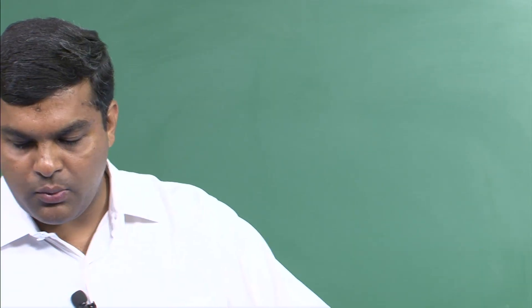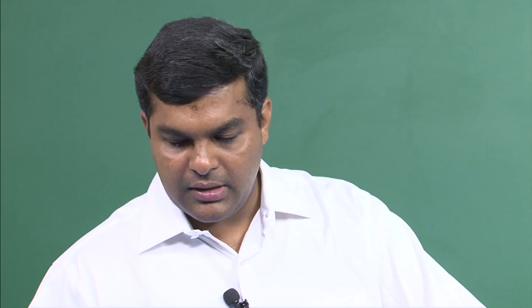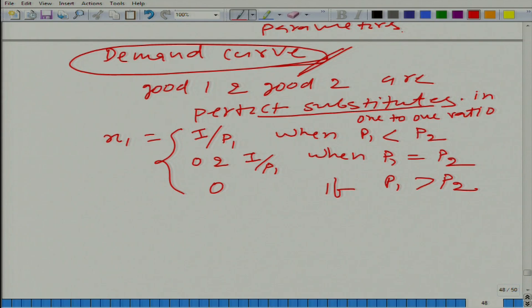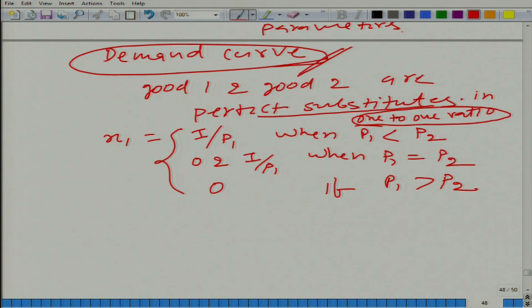I am saying that in this example good 1 and good 2 are perfect substitutes in a 1 to 1 ratio. The definition of perfect substitutes is that two goods are perfect substitutes if the consumer is willing to exchange one good for the other in a fixed ratio — that ratio can be anything, 1:2, 2:1 — but here I am saying the consumer is willing to exchange good 1 for good 2 in a 1 to 1 ratio. In that case, this is the demand function we get.